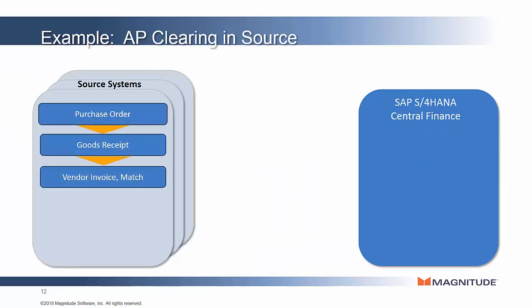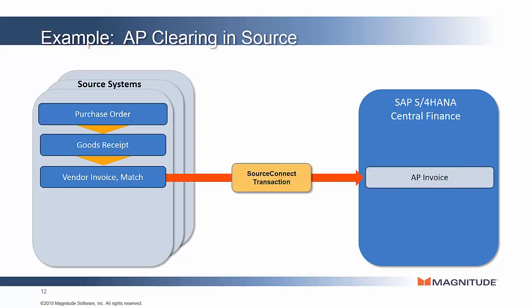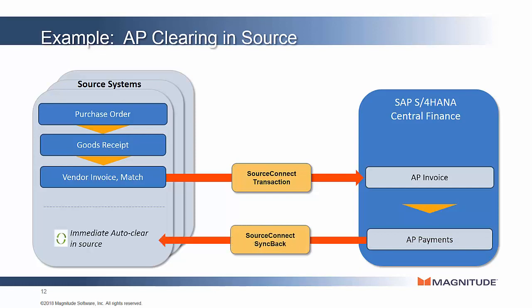Let's look closer at the AP example. Typically your purchase order, goods receipt, vendor invoice, and matching still happen in the source system. At that point, SourceConnect Transaction replicates the AP or vendor invoice into Central Finance, and then you pay that invoice out of Central Finance. It's at that payment time that SourceConnect Syncback takes that payment, posts it back to the source system, and applies it against that source invoice to close that invoice.